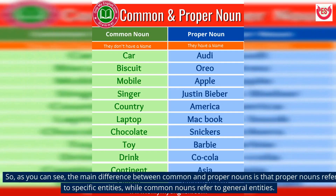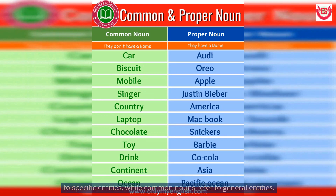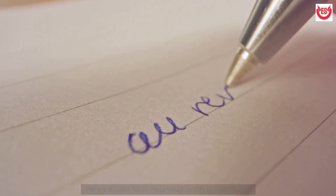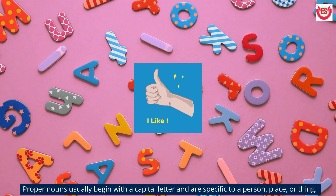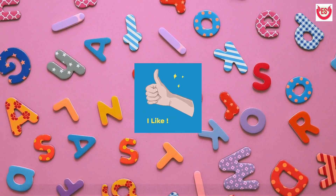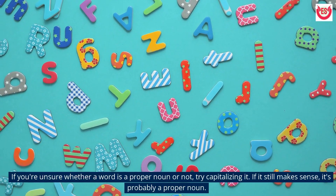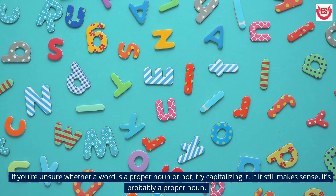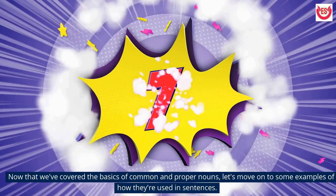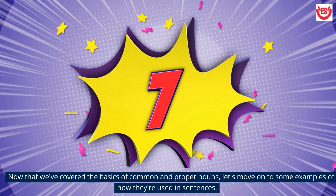As you can see, the main difference between common and proper nouns is that proper nouns refer to specific entities, while common nouns refer to general entities. Here's a quick tip to help you identify proper nouns: proper nouns usually begin with a capital letter and are specific to a person, place, or thing. If you're unsure whether a word is a proper noun or not, try capitalizing it. If it still makes sense, it's probably a proper noun. Now that we've covered the basics, let's move on to some examples of how they're used in sentences.